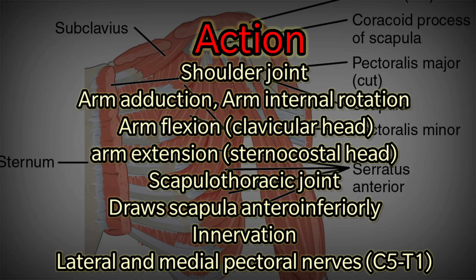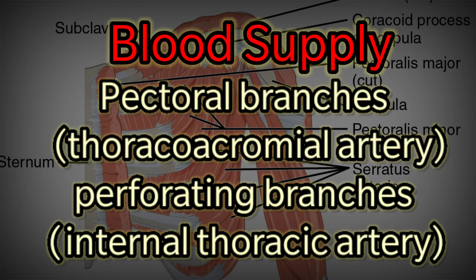Actions at the shoulder joint include arm adduction, internal rotation, and arm flexion (clavicular head), and arm extension (sternocostal head). At the scapulothoracic joint, it draws the scapula antero-inferiorly. Innervation: lateral and medial pectoral nerves (C5 to T1). Blood supply: pectoral branches of the thoracoacromial artery and perforating branches of the internal thoracic artery.